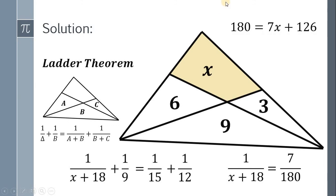Now, cross multiply will give us 180 is equal to 7x plus 126. Subtract 126 both sides, and we have 54 is equal to 7x. It follows that x is equal to 54 over 7 square units, and we're done.